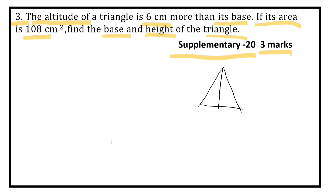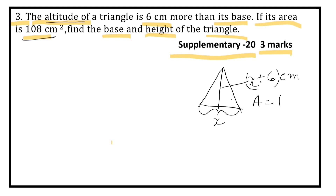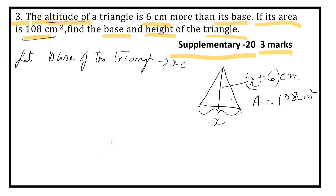According to the question, altitude of the triangle is 6 cm more than the base. So let the base be X cm. Then the altitude is X plus 6 cm. The area of the triangle is 108 cm square.